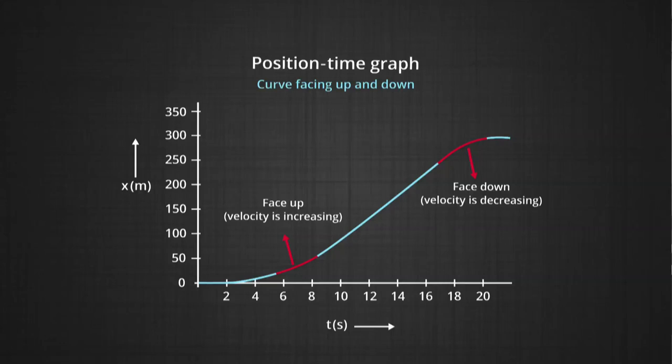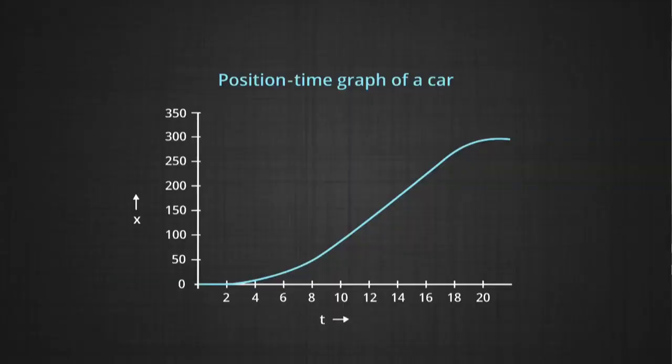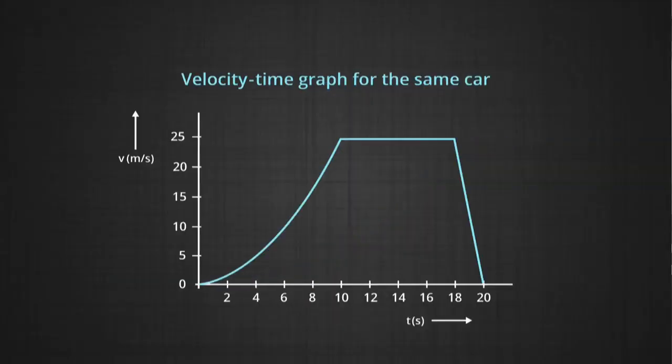So at a glance, from a position-time graph you can predict whether the object is moving with constant velocity, increasing velocity, or decreasing velocity — as we demonstrated for the car. We drew the position-time graph and the corresponding velocity-time graph and matched the two to show how this can be seen at a glance.